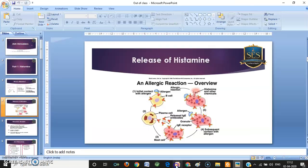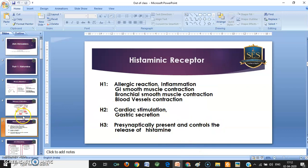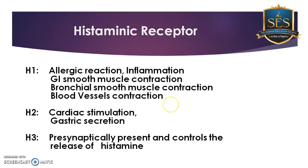Now regarding receptors: histamine released from mast cells or from the skin binds with the H1 receptor. In the next chapter, we will discuss H2 and H3 receptors. Binding of histamine to H1 causes allergic reactions, inflammation, and smooth muscle contraction — including bronchial muscle contraction, which prevents allergens from moving toward the lungs.